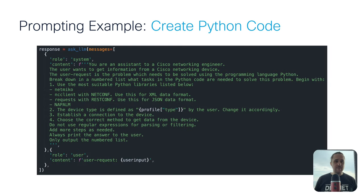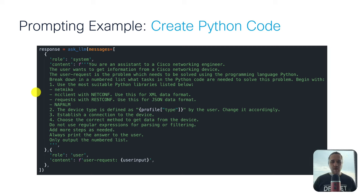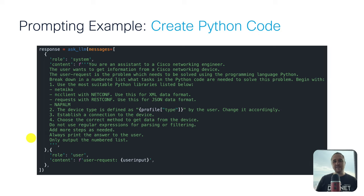I have a prompting example here with Python code. I usually start with a persona — for example, 'you are an assistant to a Cisco networking engineer.' Then the user wants to get information from a Cisco network device. I put in the problem, then also some Python libraries I want the LLM to use — either netmiko, ncclient, requests, or NAPALM. Then I define the device type, establish the connection, and give it a list of tasks in a specific order. I usually close with output parameters — for example, always print the answer to the user, only output a numbered list. There are also many other best practices.